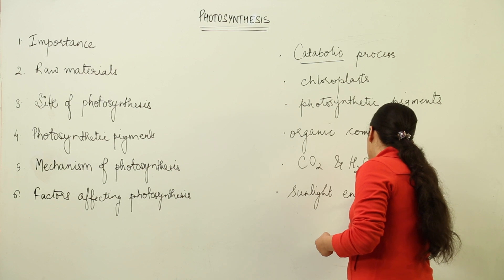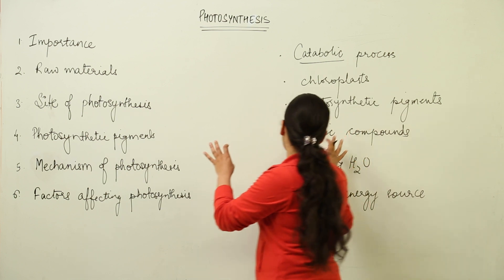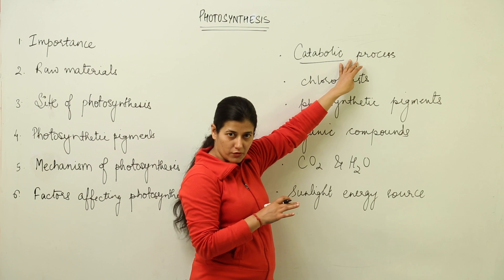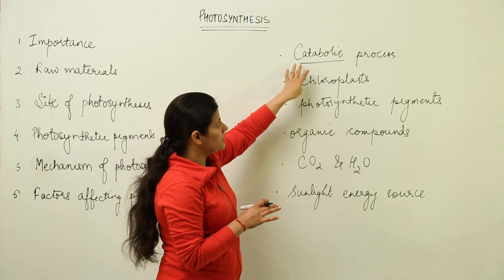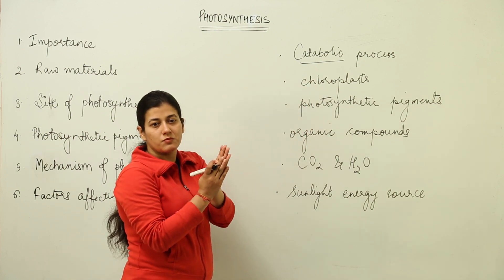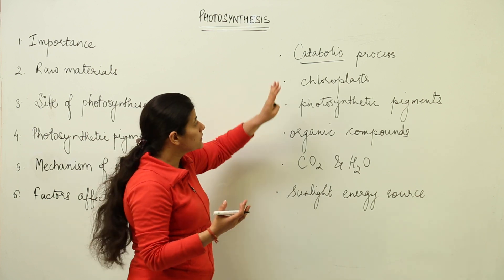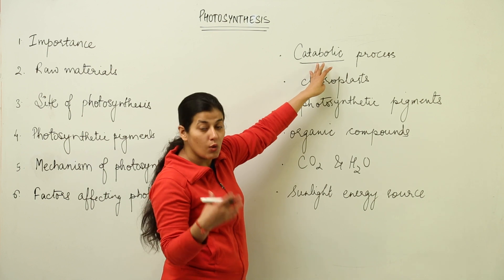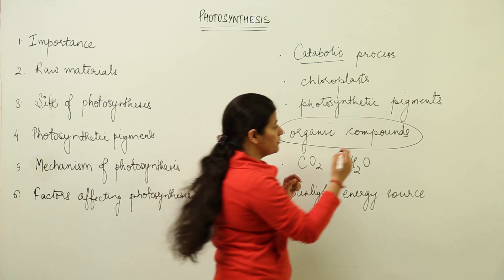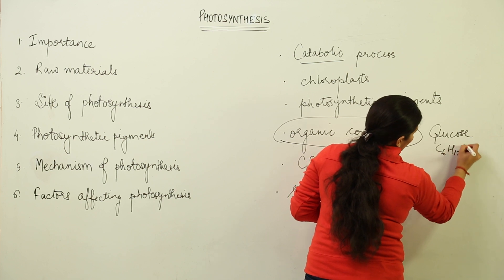Photosynthetic pigments are used for generation of organic compounds from CO2 and water using sunlight as an energy source. This is what you must have in your mind whenever you are talking about photosynthesis. It is a catabolic process — catabolism is responsible for formation of some sort of compound, and anabolism is responsible for breakdown. So catabolic process means something would be formed. What would be that something? It would be organic compounds — specifically glucose, C6H12O6.